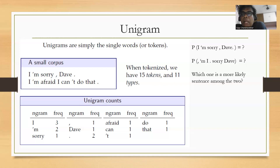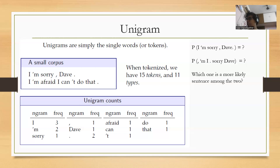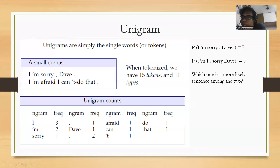Question: probability of 'I am sorry Dave' versus probability of ', I. sorry Dave' — which one is more likely? Our gut says the first one is more likely because it's a more meaningful sentence. But the model doesn't have any understanding of English — it must use this corpus to figure out which one is more likely.